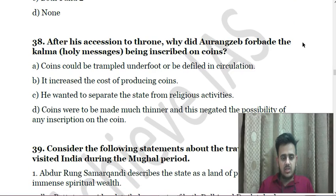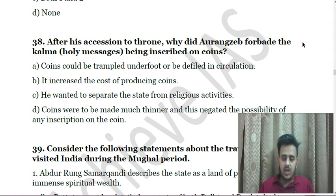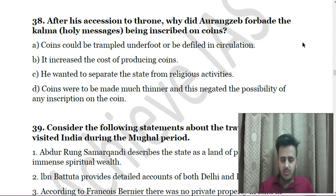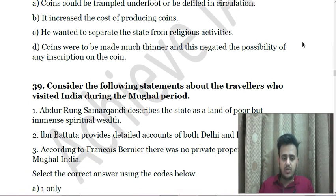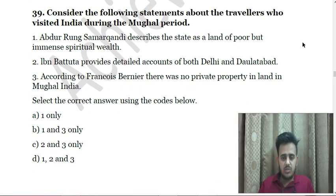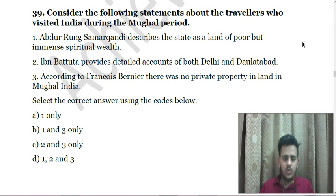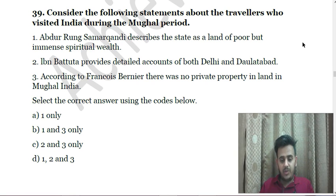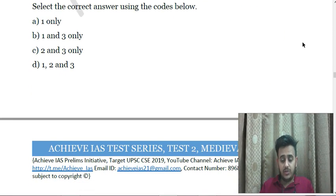Next: After his accession to the throne, why did Aurangzeb forbid the Kalima (holy messages) being inscribed on coins? A. Coins could be trampled underfoot or be defiled in circulation; B. It increased the cost of producing coins; C. He wanted to separate the state from religious activities; D. Coins were to be made much thinner, negating the possibility of any inscription. Next: Consider the following statements about travelers who visited India during the Mughal period — First, Abdur Razzaq Samarqandi described the state as a land of poor but immense spiritual wealth; Second, Ibn Battuta provides a detailed account of both Delhi and Daulatabad; Third, according to François Bernier, there was no private property in land in Mughal India.